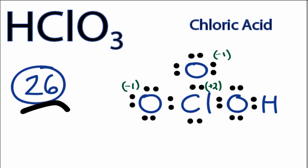What we can do is move a pair of electrons from the outside of the oxygen to the middle to form a double bond. When we do that, the formal charge on the oxygen here becomes 0, and the chlorine now has a plus 1 charge. So let's do that again with this other oxygen.